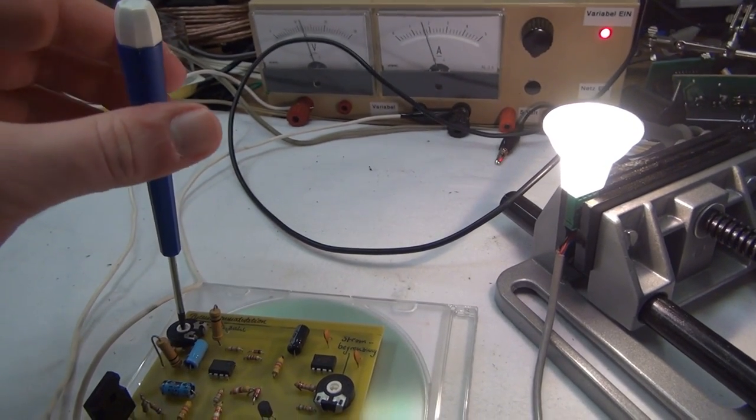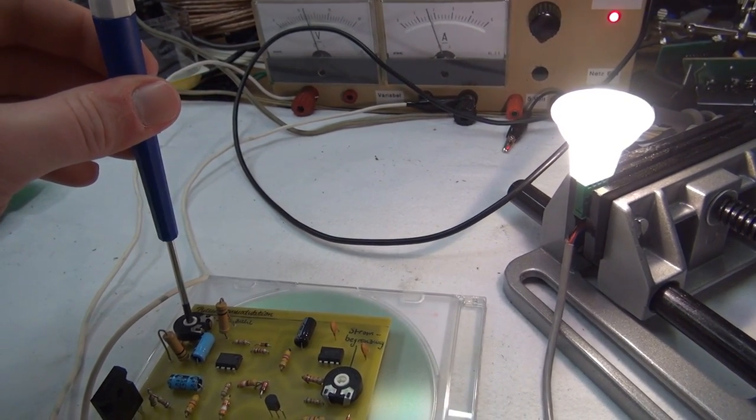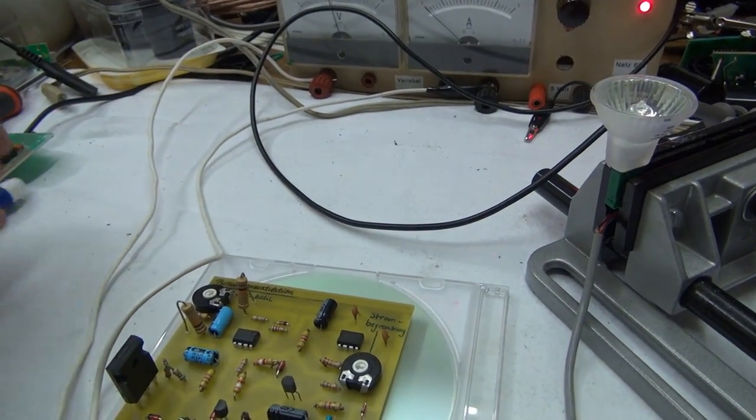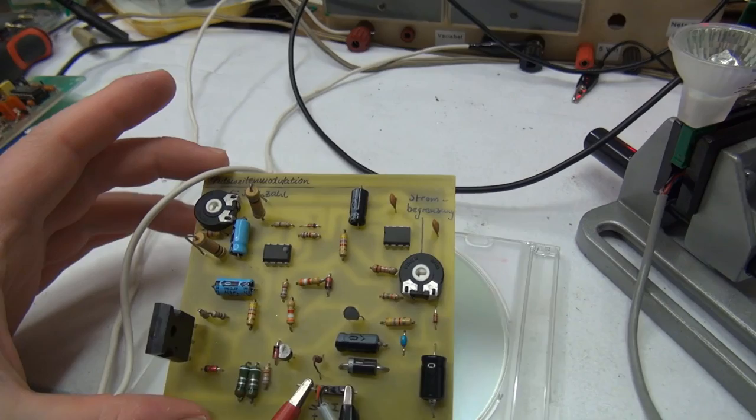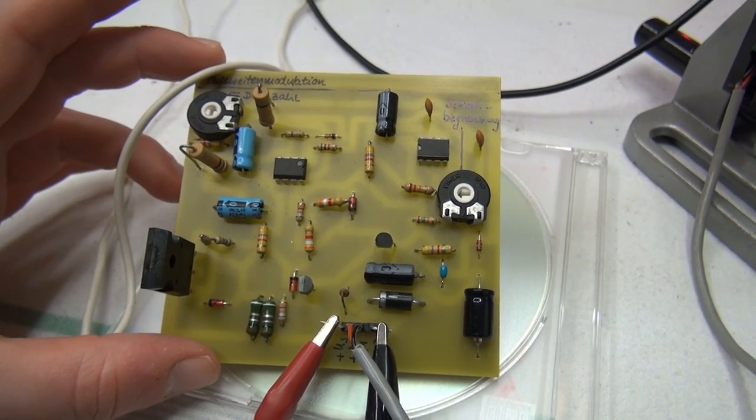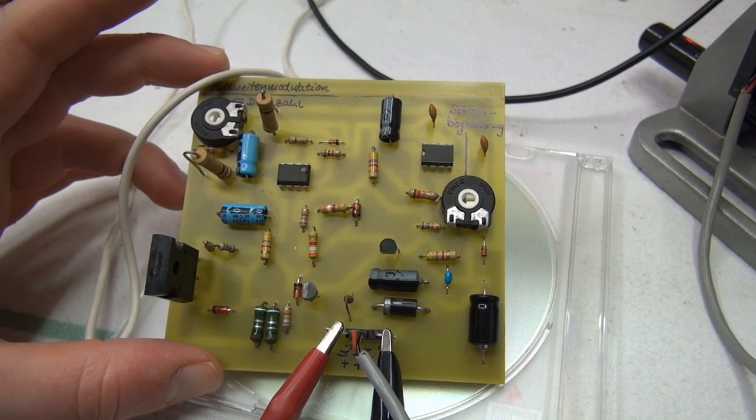So, that's that. You can also use it as a dimmer. There you have it. The pulse-width modulation circuit that I built in school back in 2009. Thank you for watching.